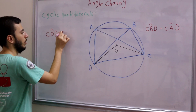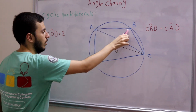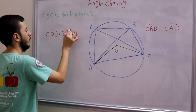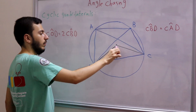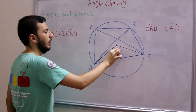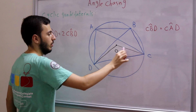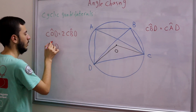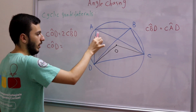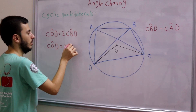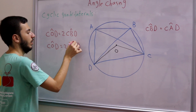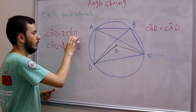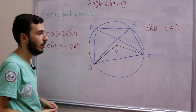Using the circumcenter O, we get angle COD equals 2 times angle CBD. Since O is also the circumcenter of triangle ACD, we also get angle COD equals 2 times angle CAD. Therefore 2 times angle CBD equals 2 times angle CAD, which gives us angle CBD equals angle CAD — proving property two.